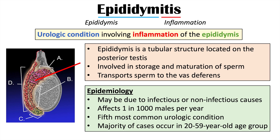This condition is due to infectious and non-infectious causes. It is a relatively common condition, affecting one in 1,000 males per year, and is actually the fifth most common urologic condition. The majority of cases occur in the 20 to 59 year age group.